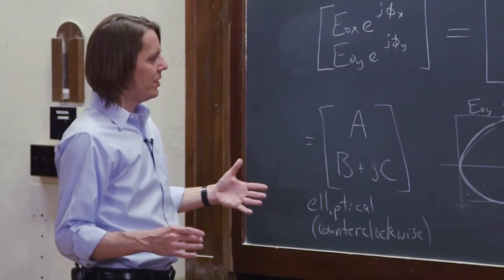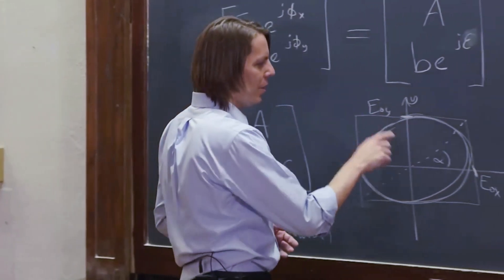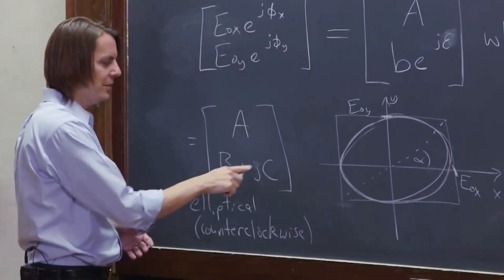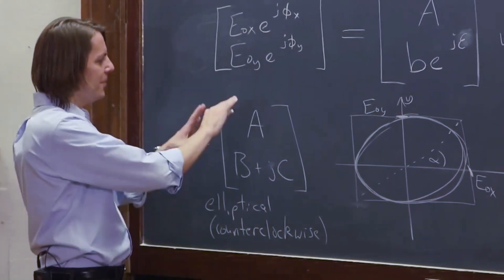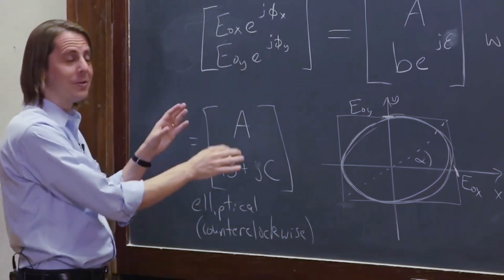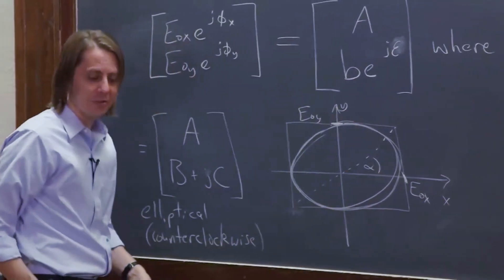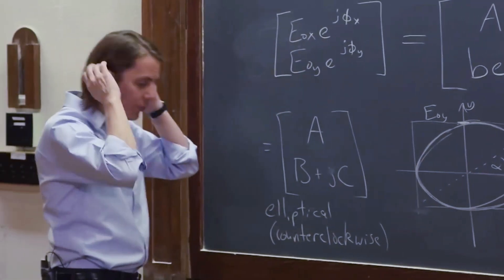So what we want to do is find the link between E not Y, E not X and alpha, and A, B, and C. Because then you have a formalism that's useful in Jones calculus and you have the actual physical parameters. What's the amplitude? How far off axis is it? So let's find those links.